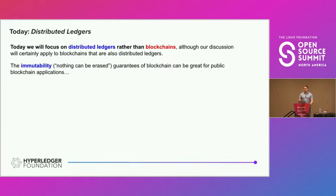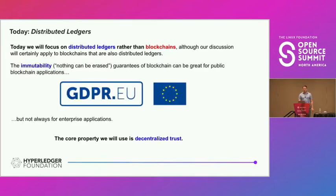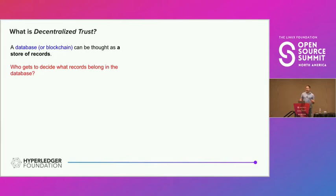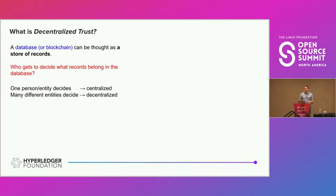The immutability properties of blockchain can be great for public applications, but not always for enterprise solutions. For instance, if you have GDPR regulations, immutability can be a very bad thing. So the core property we focus on is decentralized trust. If we're thinking of a database as a store of records, who gets to decide what records belong in the database? If one entity decides, we have a centralized database; if many entities decide, we have a decentralized database. Trust is a continuum.